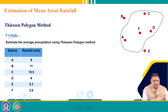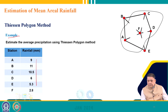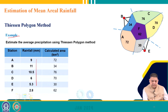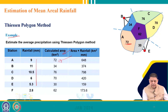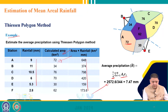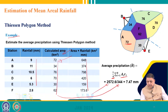For the Thiessen polygon example: given stations with their recorded rainfalls and representative areas — for example, station E represents 72 km² — we multiply each station's area by its rainfall, sum those products (giving 2572.6 km·mm), and divide by the total area (344 km²). The average precipitation comes out to be 7.47 mm.